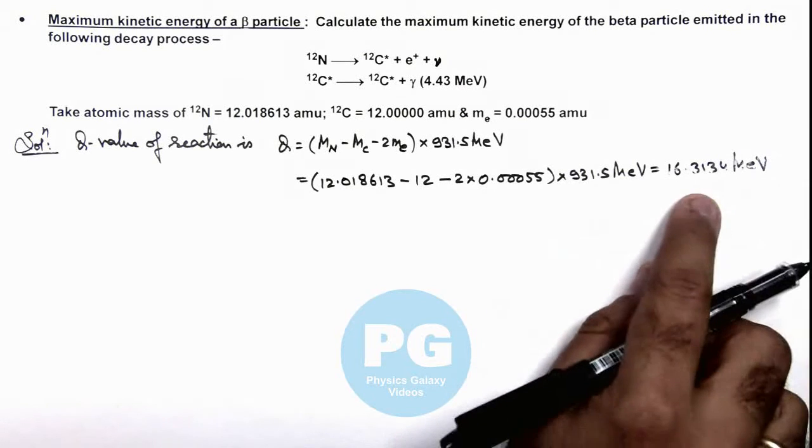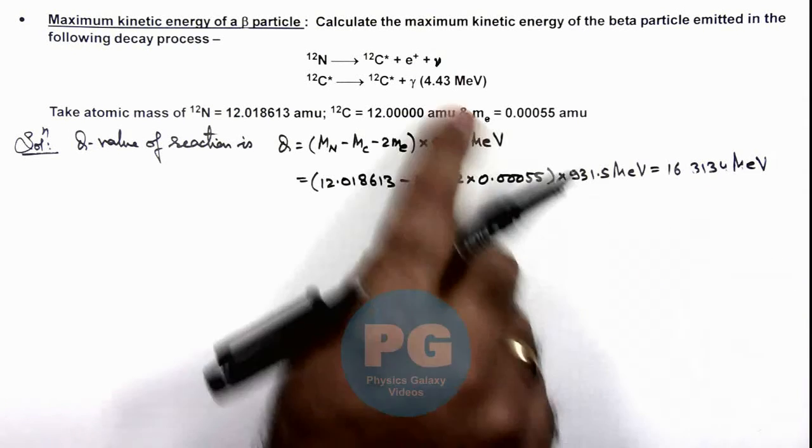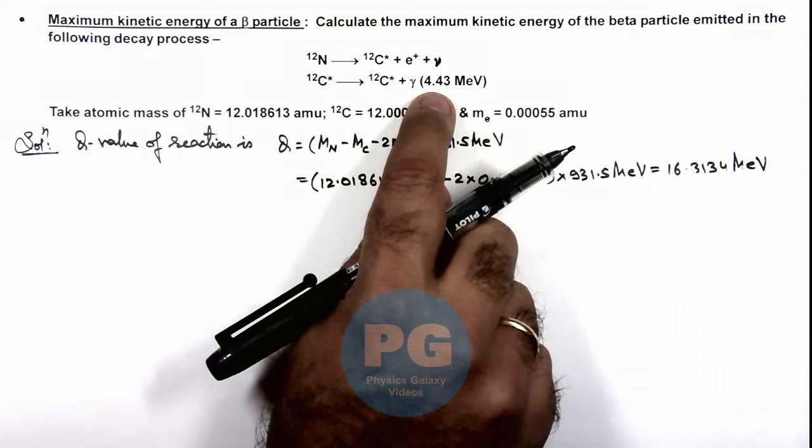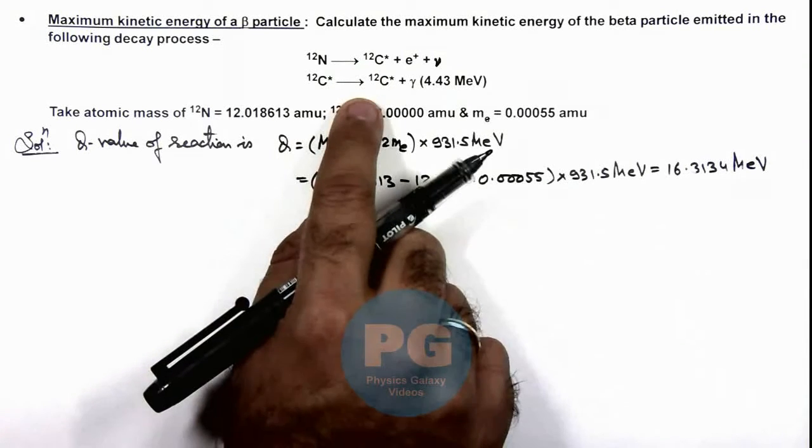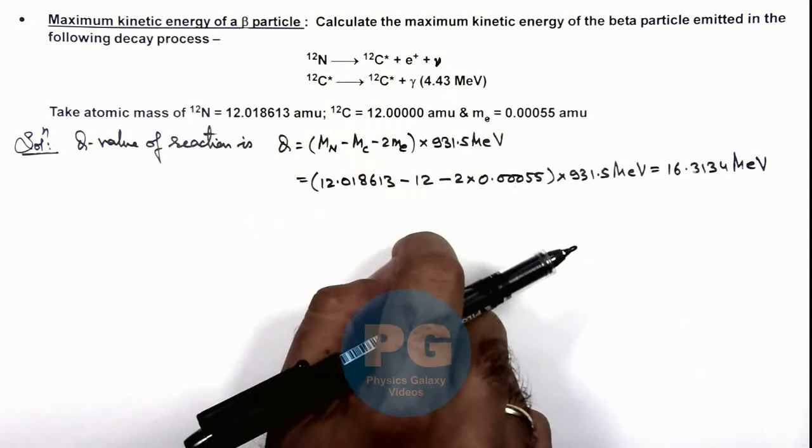Out of this energy, 4.43 MeV is absorbed by carbon in its excitation, and later it is released in form of gamma rays.